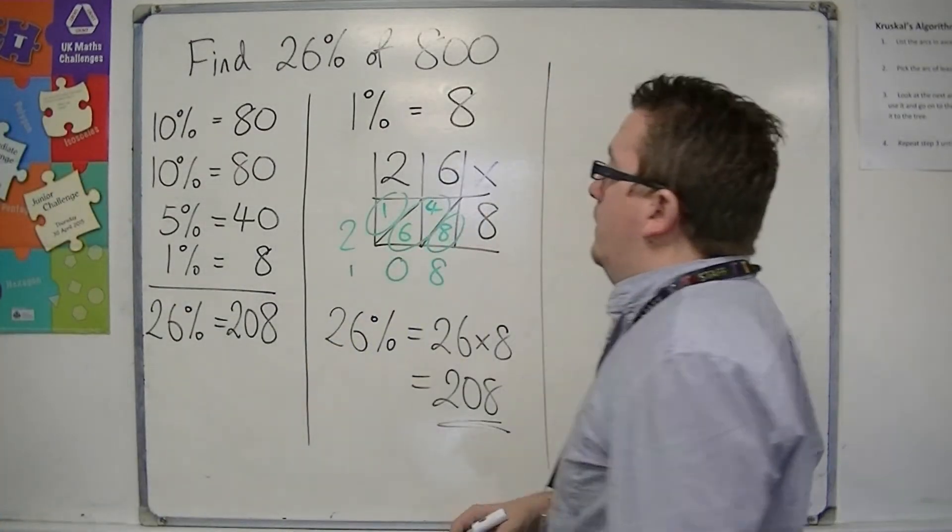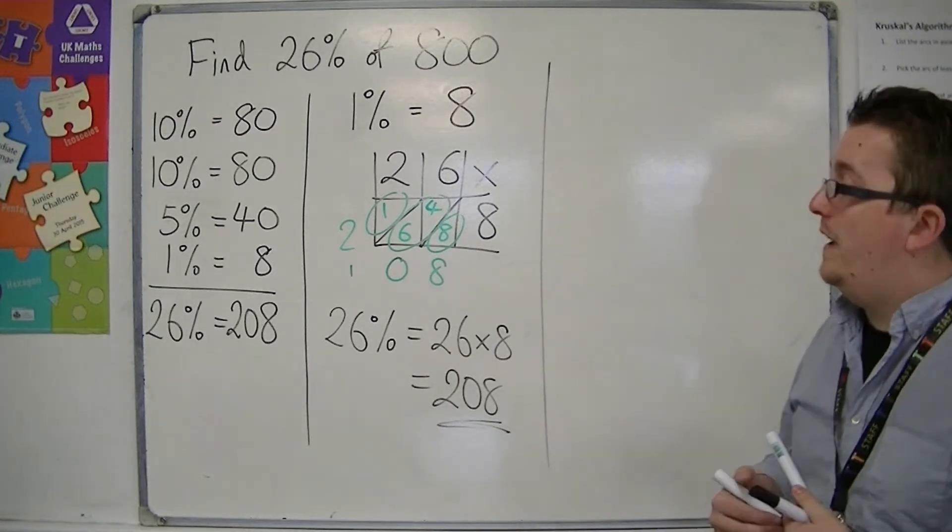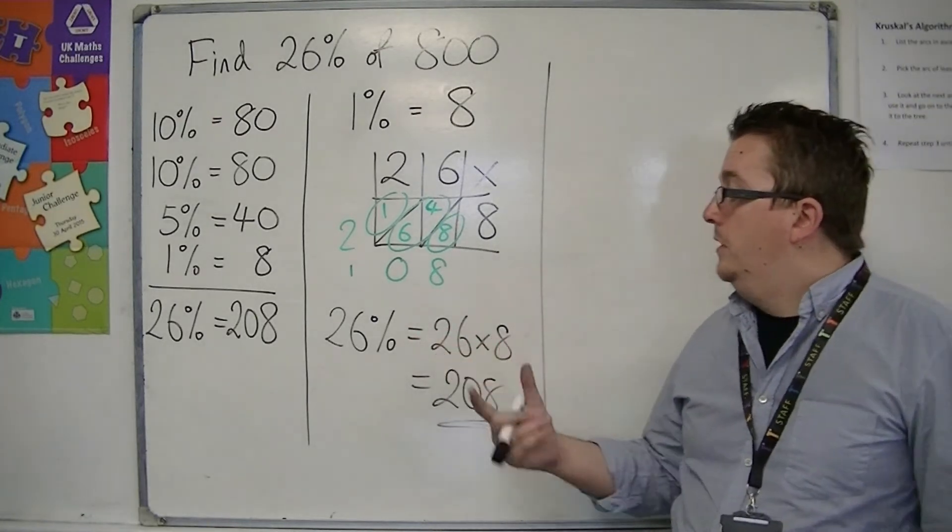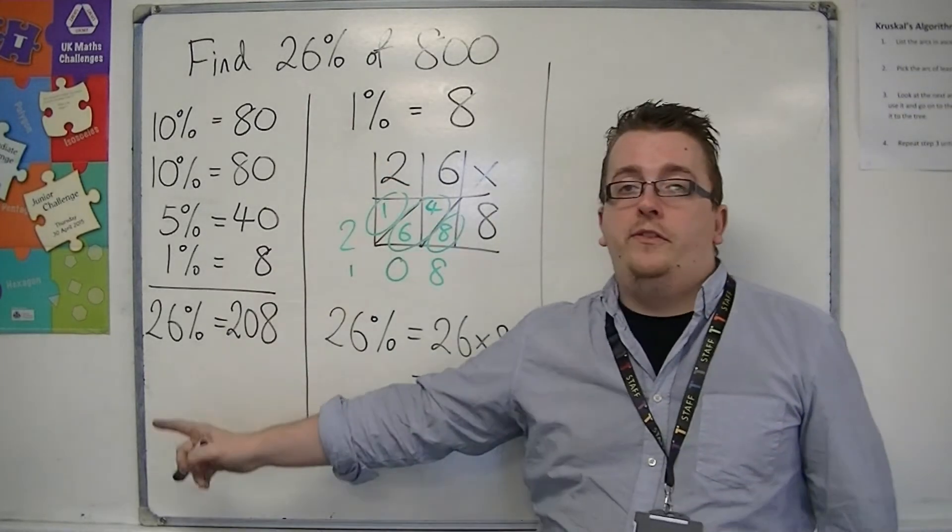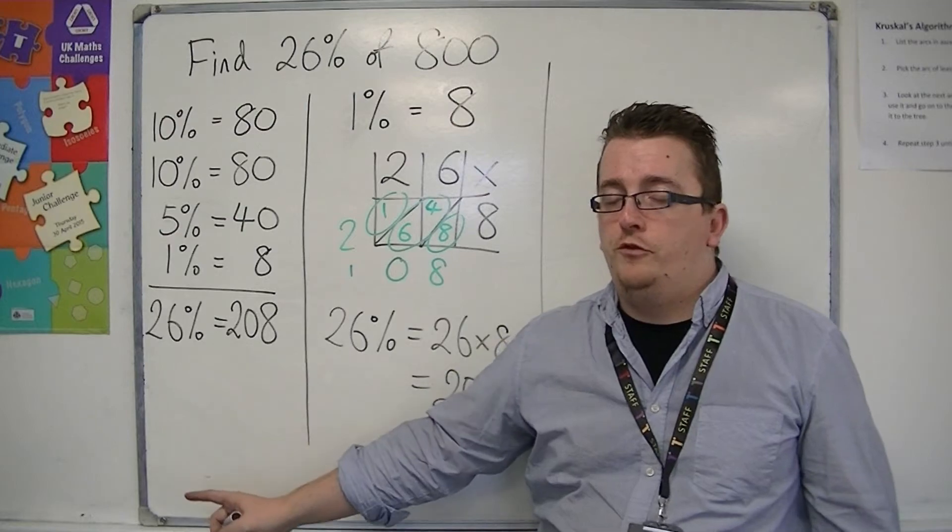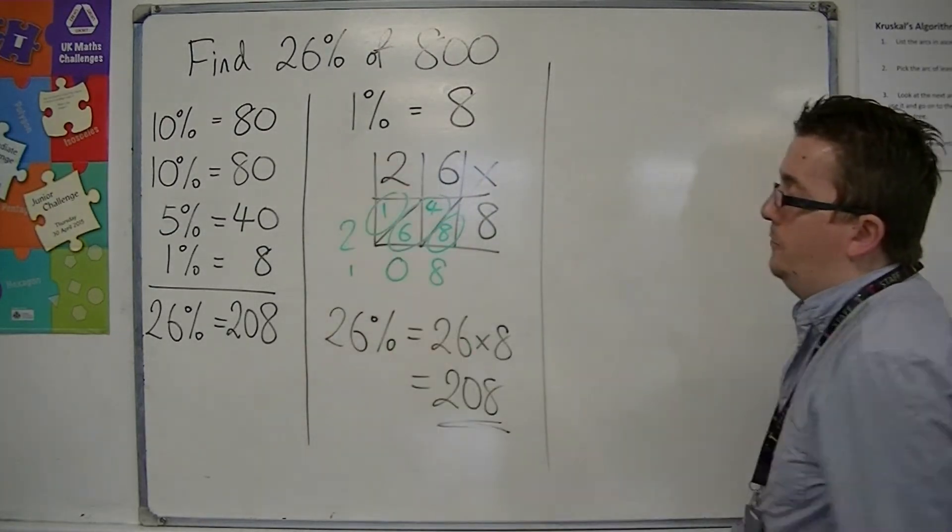So that way is quite nice. If you're very happy with long multiplication and you want to do it that way, then perfectly viable. If you're not so happy with long multiplication, then this method is probably going to be your preferred route. So these are the two by-hand methods.